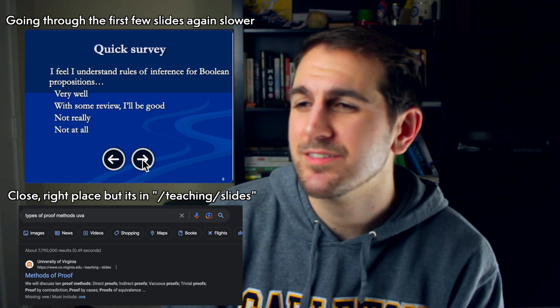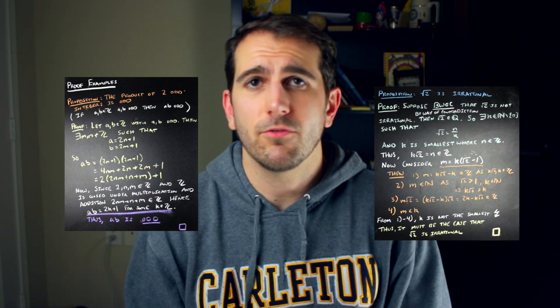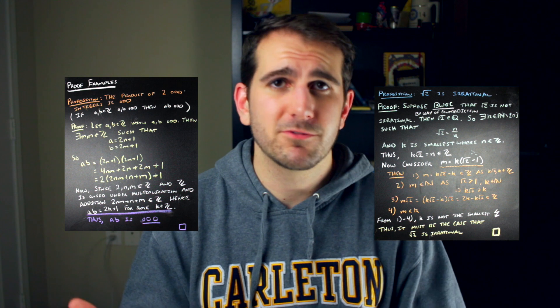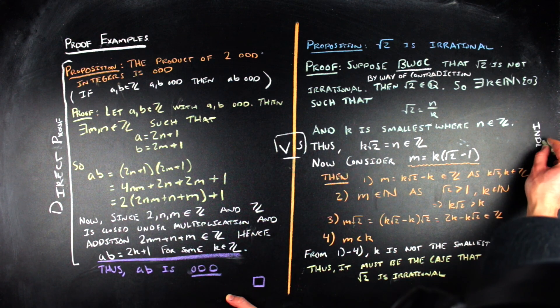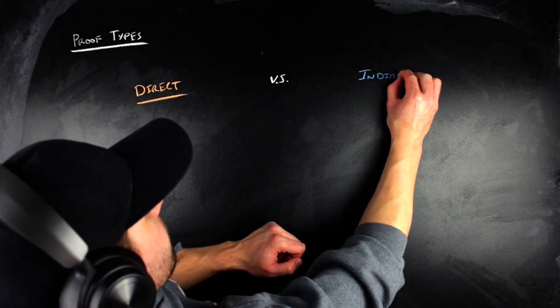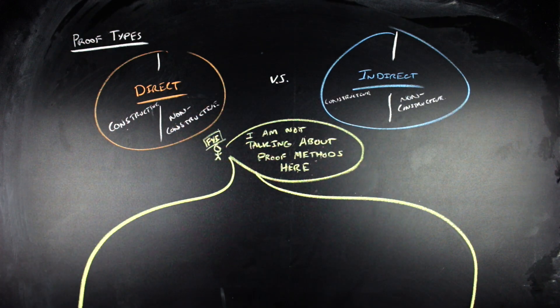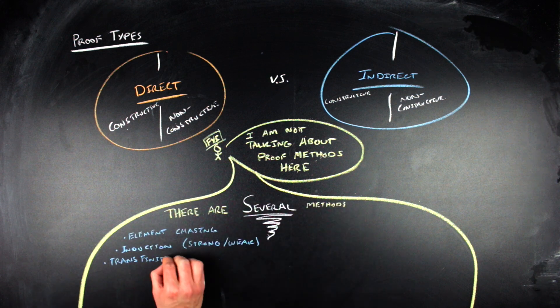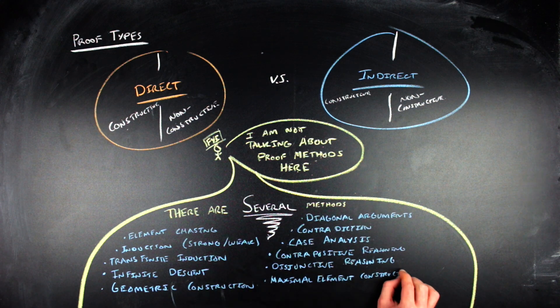Anyway, back to the content of this video. I've gone ahead and started with those two example proofs because they give examples of the two different types of proofs that are out there. There are direct proofs, like the first proof we did, and indirect proofs, like the second proof we did. The big caveat here is that I am not at all talking about proof methods - there are several, and many of them can come up in both types of proof.